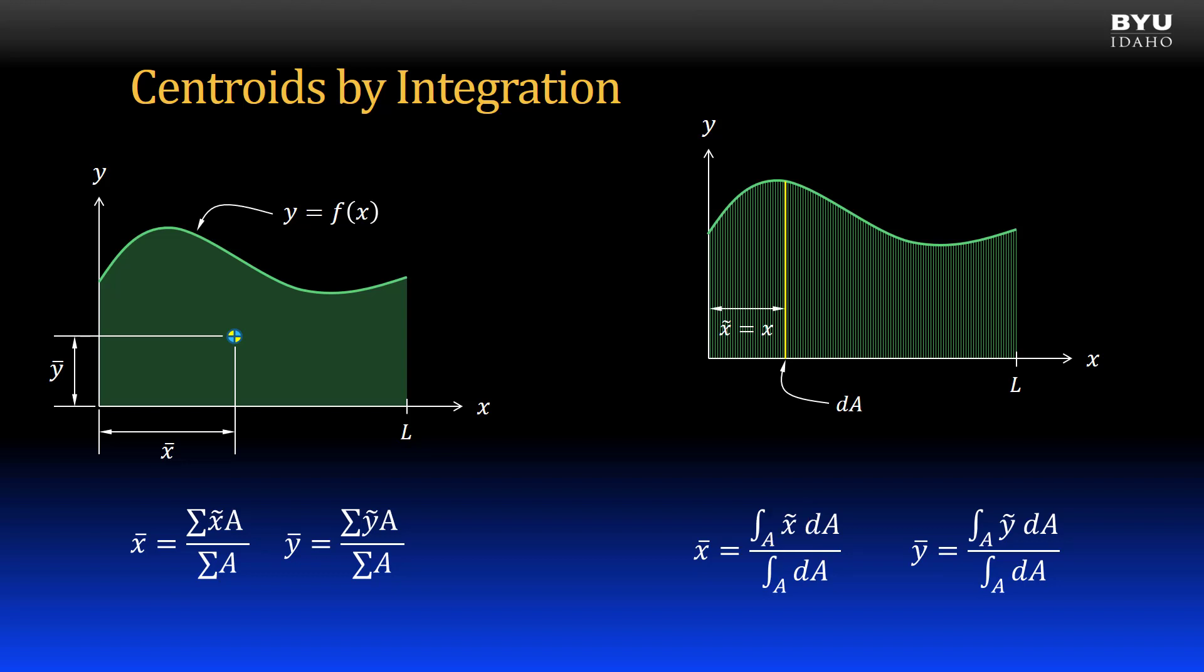The height of the dA rectangle is then equal to y evaluated at the distance x. So dA is the function evaluated at x times dx. The y tilde dimension is then half the height.